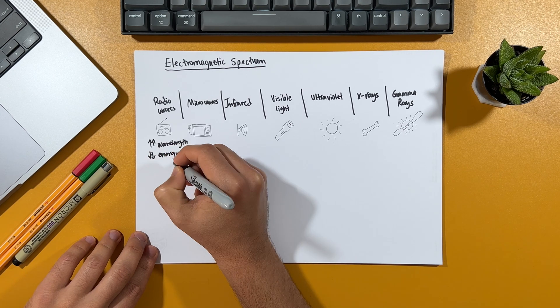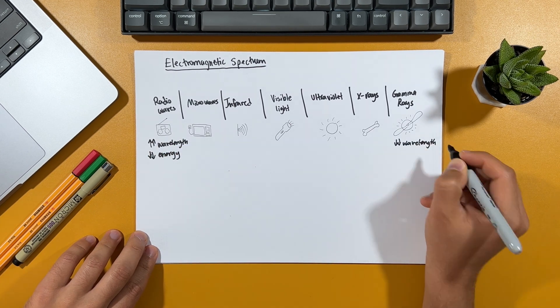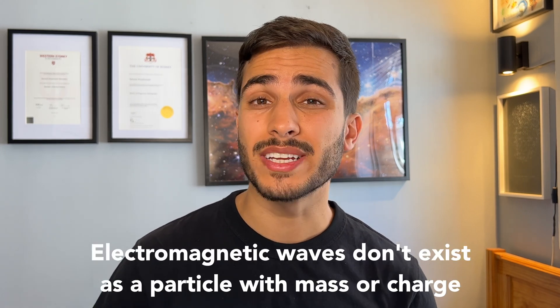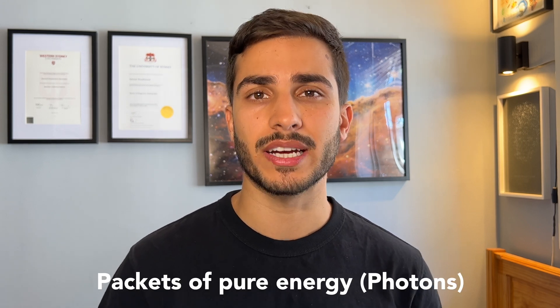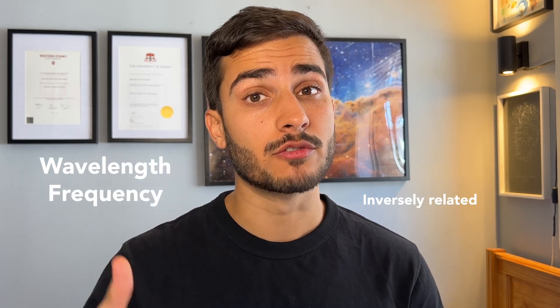Alright, now let's move on to the electromagnetic spectrum, which is basically just a range of all the different types of electromagnetic radiation. From the longest wavelength and lowest energy radio waves, to the shortest wavelength and highest energy gamma rays. Each type of electromagnetic radiation has a unique set of properties, and they're used in different ways for a variety of purposes. The key distinction between this and particulate radiation, is that electromagnetic waves don't exist as a particle with mass or charge. Instead, they're considered to be little packets of pure energy. What's interesting is that irrespective of their wavelength or frequency, which are inversely related by the way, they have a few properties in which they share.